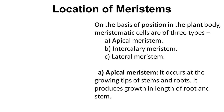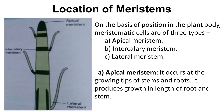Apical meristematic cells are present at the growing tips of the stem and roots. They are responsible for the growth in length of the root as well as the stem. In the tip region we can see the apical meristematic cells which are responsible for the entire growth of the plant body.